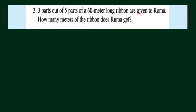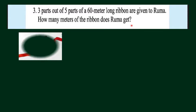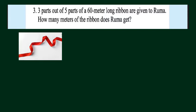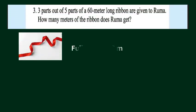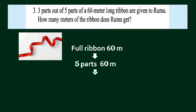The next question: 3 parts out of 5 parts of a 60-meter long ribbon are given to Ruma. How many meters of the ribbon does Ruma get? The total length of the ribbon is 60 meters. One part out of 5 parts is 60 ÷ 5 = 12 meters. From one part we can find 3 parts: 12 × 3 = 36 meters.